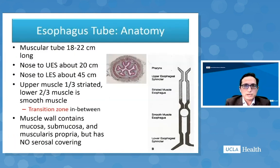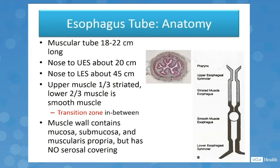The esophagus is a muscular tube that's 18 to 22 centimeters long. The distance from the nose to the upper esophageal sphincter is about 20 centimeters, and from the nose to the lower esophageal sphincter is about 45 centimeters. The upper esophagus consists of striated muscle, the lower two-thirds is smooth muscle with a transition zone in between. The muscle wall contains mucosa and muscularis propria but has no serosal covering.